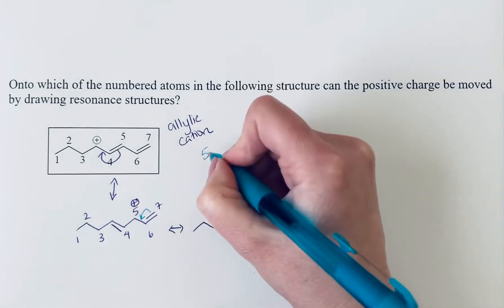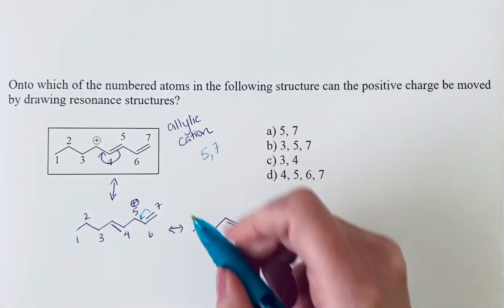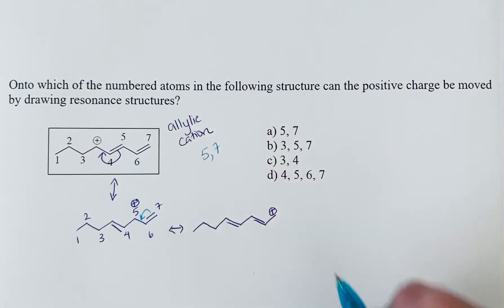So we can stabilize this positive charge onto two other carbon atoms, five and seven.